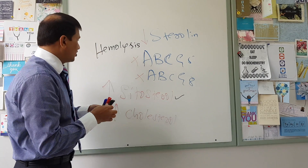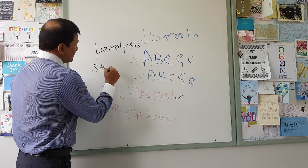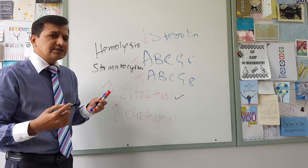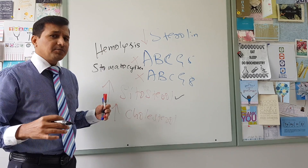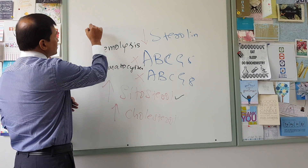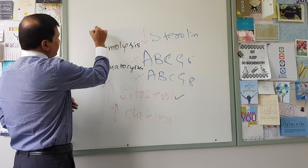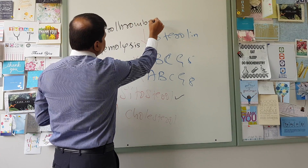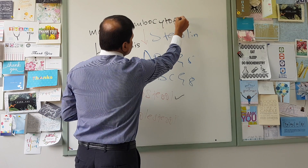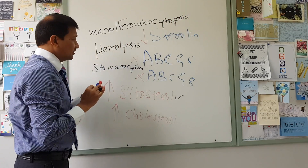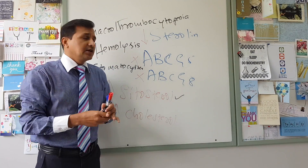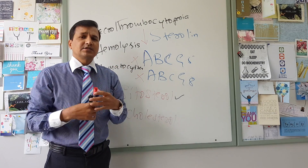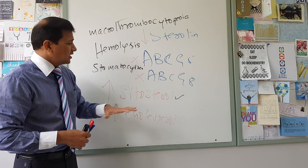Hemolysis and abnormally shaped red blood cells — called stomatocytes — can be seen in sitosterolemia. Also, the platelet size will be increased and the number of platelets will be decreased, giving rise to macrothrombocytopenia. Macro means big, thrombocytes means platelets — so macrothrombocytopenia is a decrease in platelet count where the remaining platelets are large in size. This macrothrombocytopenia, along with stomatocytes and hemolysis and atherosclerosis, are all features of sitosterolemia.